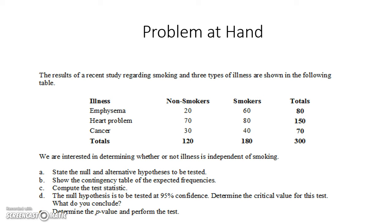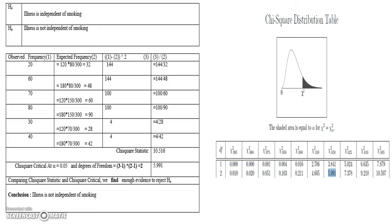Given this breakup, we are interested in finding out whether or not illness is independent of smoking. The null hypothesis H₀ is: illness is independent of smoking. For a null hypothesis, we do not consider any kind of relationship between the variables — that's why it is called the null hypothesis. The alternate hypothesis is: illness is not independent of smoking.